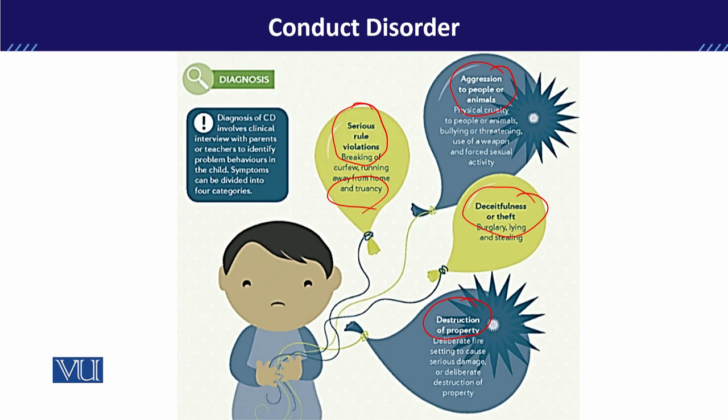इसके साथ-साथ यह भी ध्यान रखना है कि बच्चा किन-किन settings में यह behavioral problems exhibit कर रहा है — क्या सिर्फ घर के अंदर, या outside the home भी। आम तौर पर conduct disorder both settings के अंदर exhibit होता है, तो हमें इन सभी बातों का भी ध्यान रखना होता है।